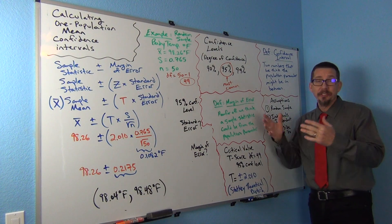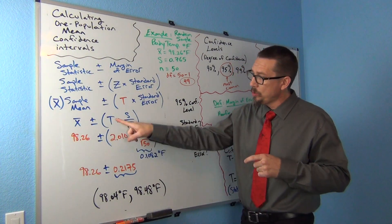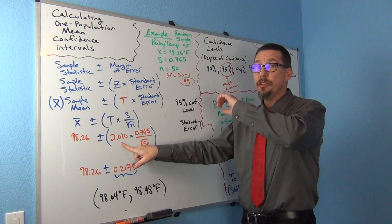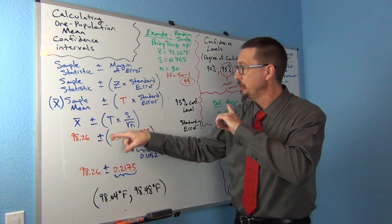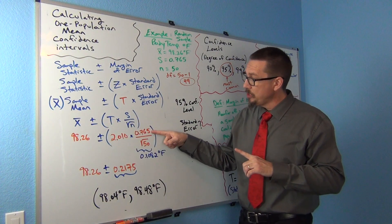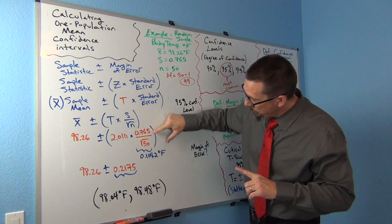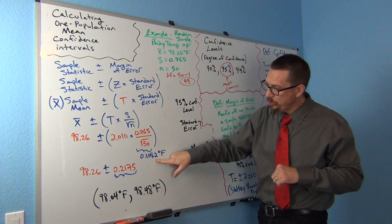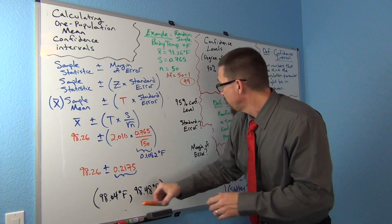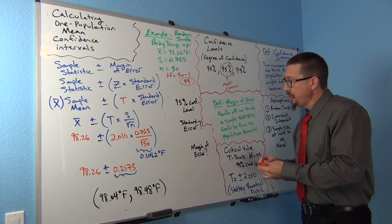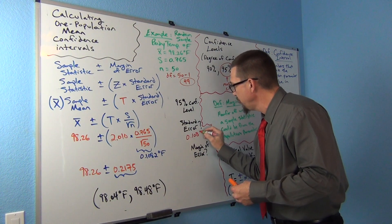Now it's just a matter of plugging the numbers in and doing a little calculation. Our sample mean was 98.26. Our t-score was 2.010. I know the critical value t-score says plus or minus 2.010, but the plus or minus is right there. Then here's our standard deviation, 0.765 divided by the square root of 50. If you actually calculate this part, divide these two, you get 0.1082. That's actually the standard error. So 0.1082 is our standard error - about 0.108 degrees Fahrenheit.